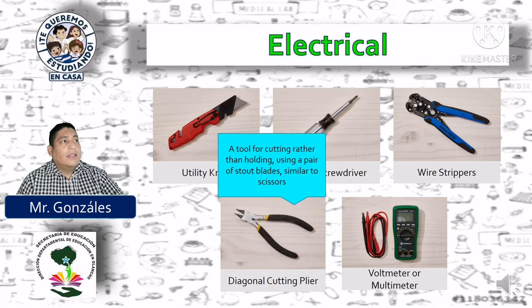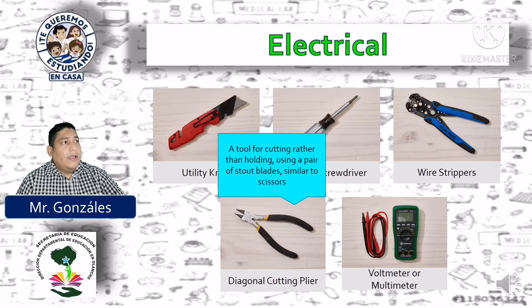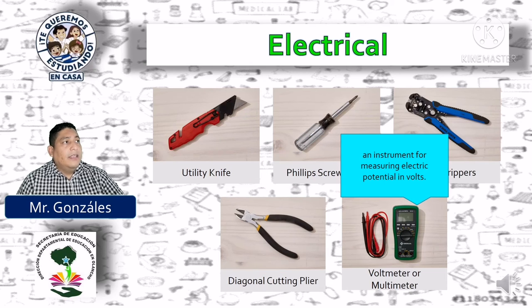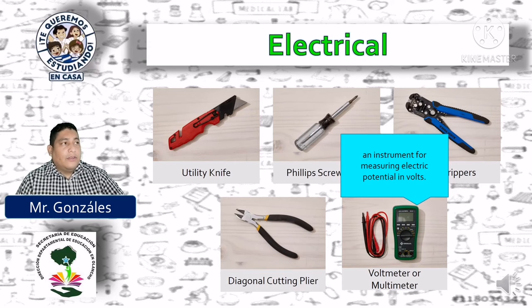Diagonal cutting plier: a tool for cutting rather than holding, using a pair of stud blades similar to scissors. Una herramienta para cortar en lugar de sostener usando un par de navajas gruesas similar a unas tijeras. Voltmeter or multimeter: an instrument for measuring electric potential in volts. Un instrumento para medir la potencia eléctrica en voltios.